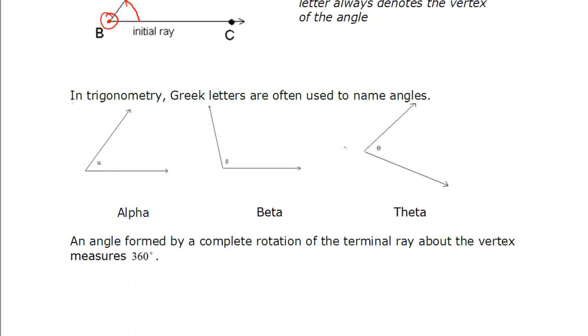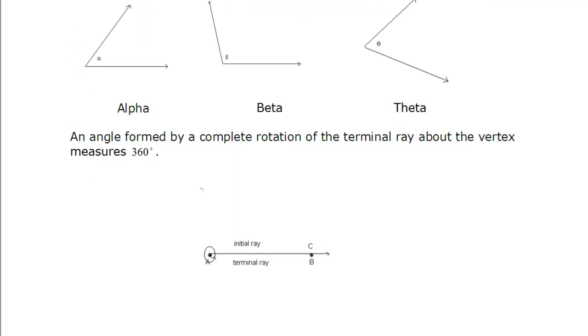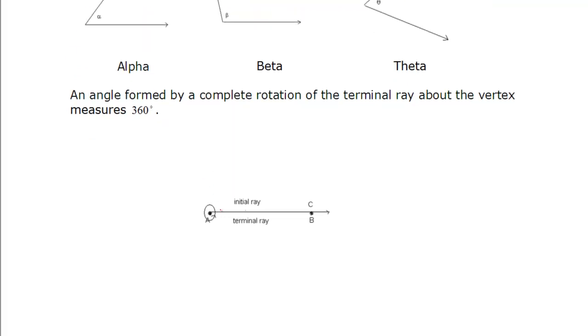A lot of times, we'll use Greek letters. So alpha, beta, theta are all common names for angles. If we take an initial ray and rotate it all the way around, back to the same spot, we get what's a full rotation, and that's 360 degrees. And we saw that on the page before.